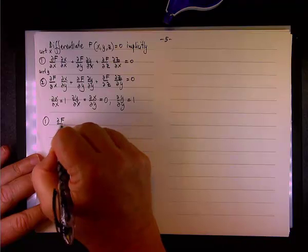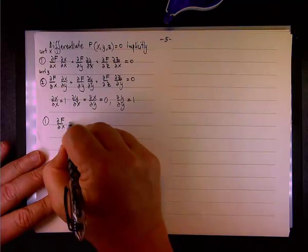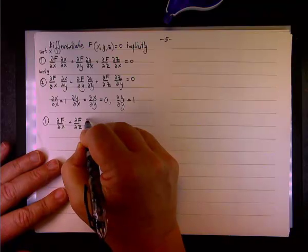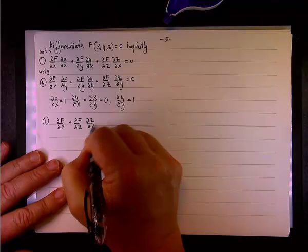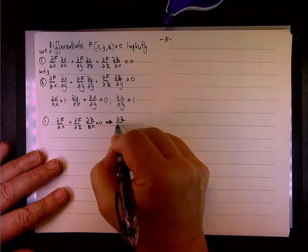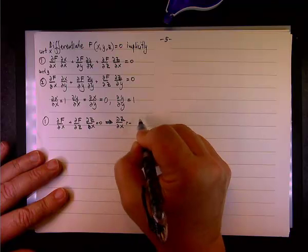And now, if you look at one, one will give you ∂f/∂x, this is zero, plus ∂f/∂z, times ∂z/∂x equals zero.